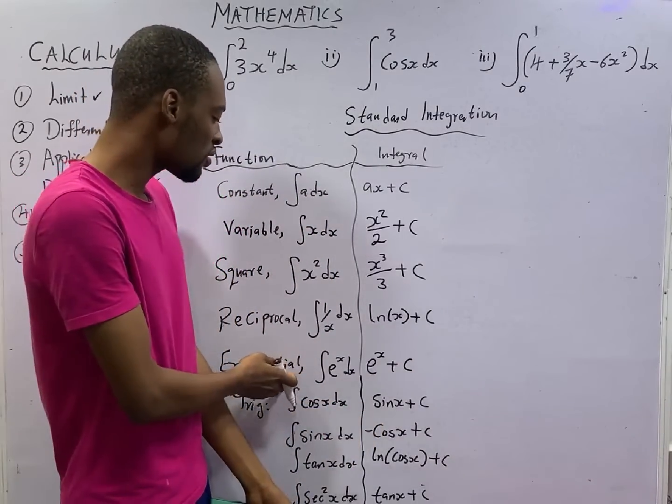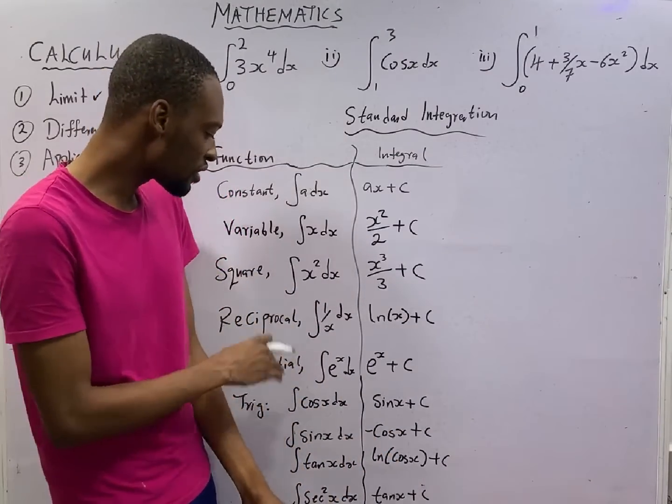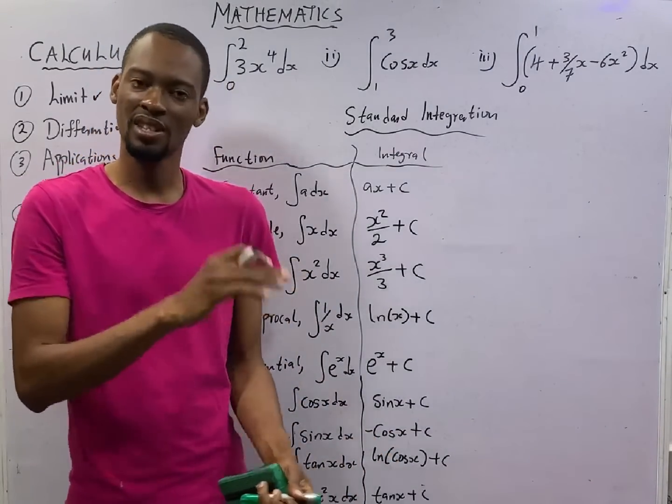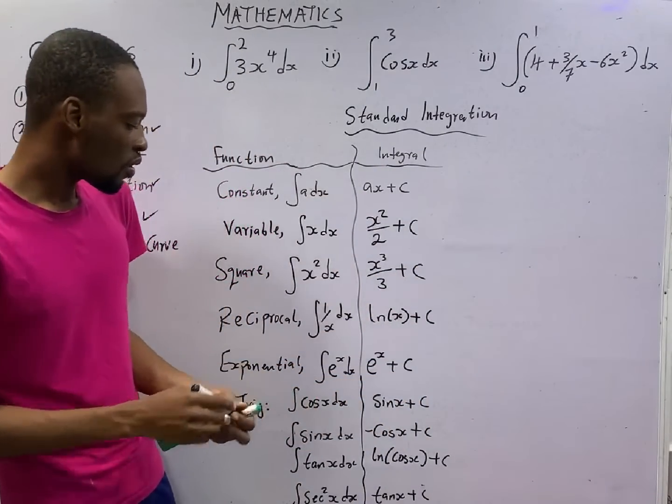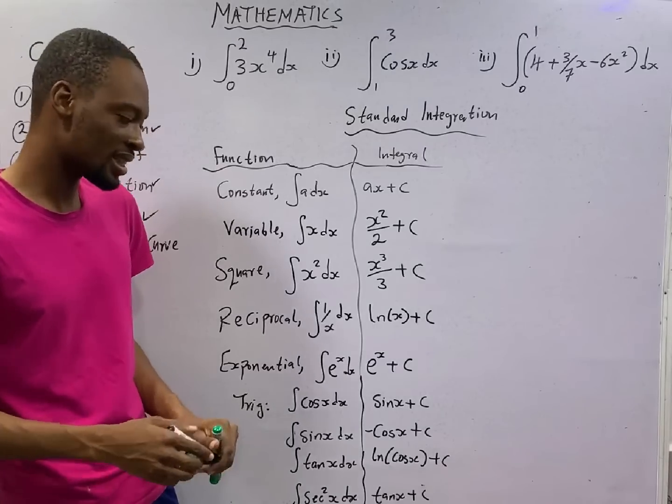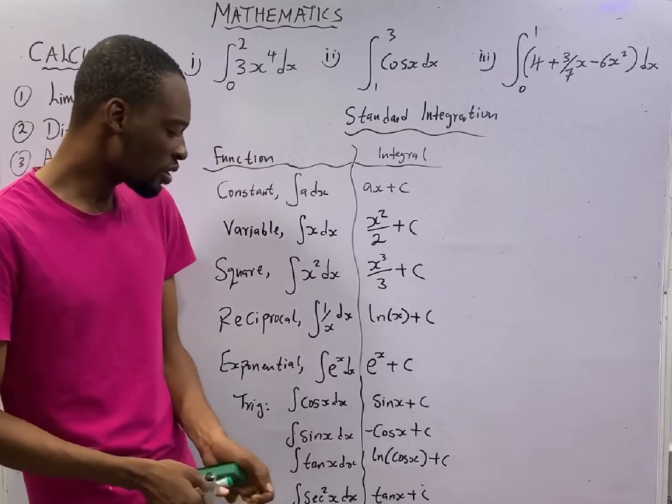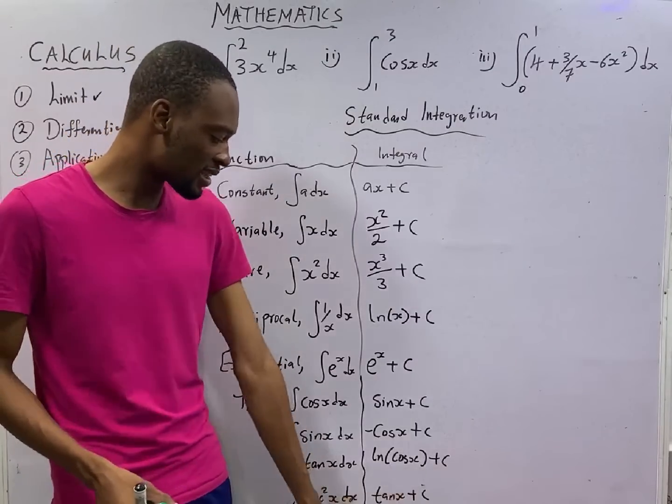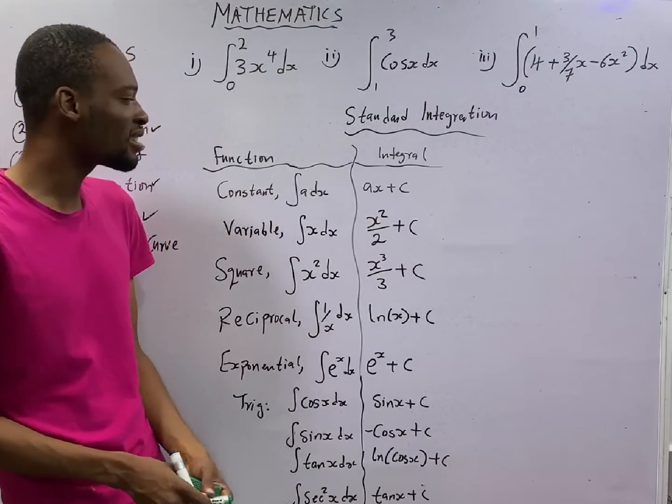Now, when you integrate cos s, you will get sin s. But when you differentiate cos s, you get minus sin s. So, positive, negative. When you integrate tan s, you get ln cos s, that is ln cos s plus c. Then, when you integrate sec square s, you will get tan s. These are standard integrals you must know.